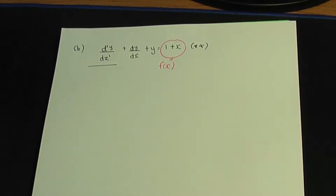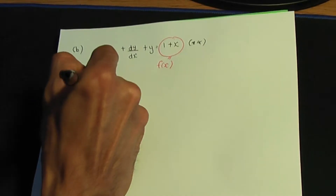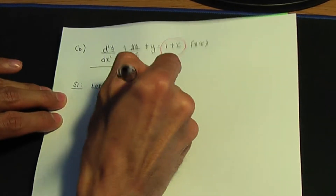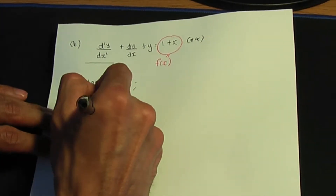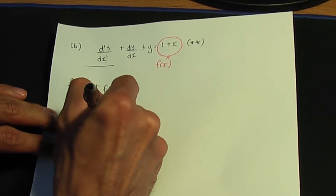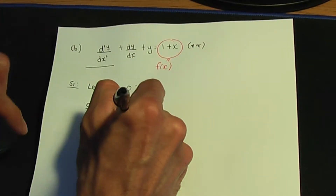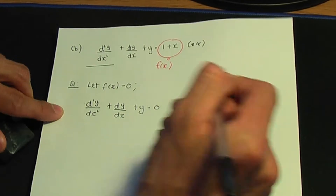Step number one is to let f(x) equal zero. So if we disregard the term on the right-hand side and replace it by zero, we get d²y/dx² + dy/dx + y = 0. We'll call that equation star.